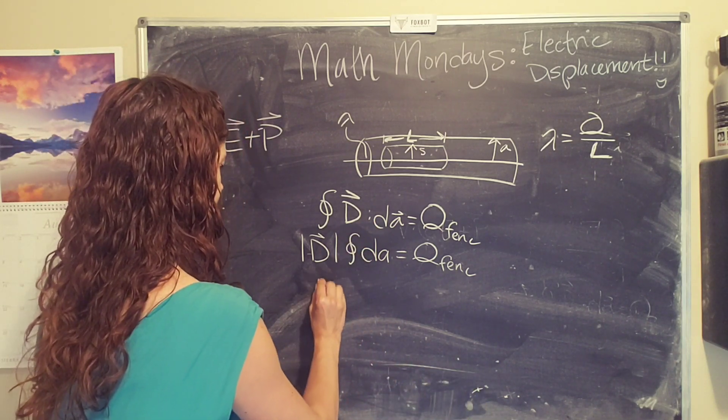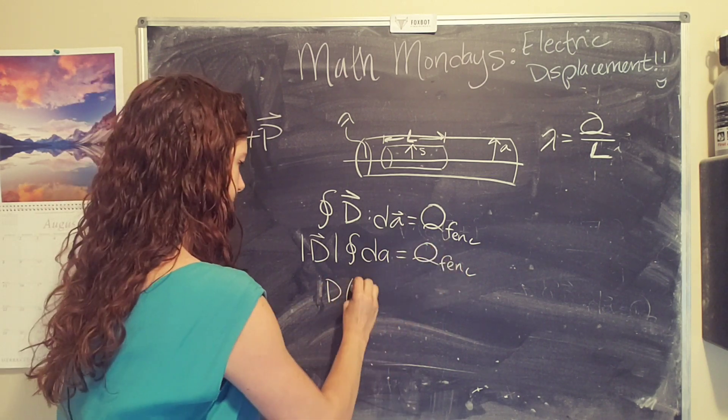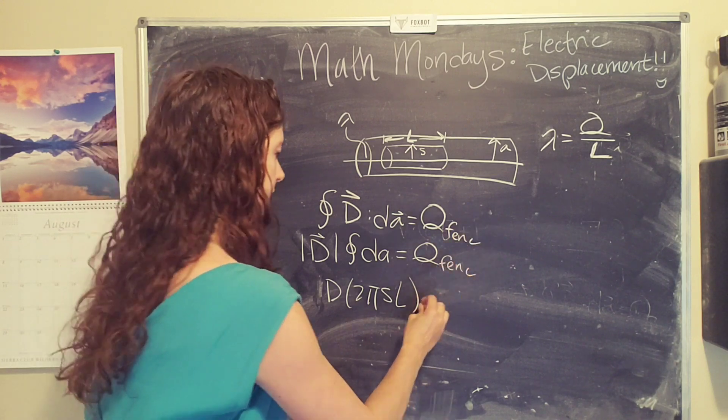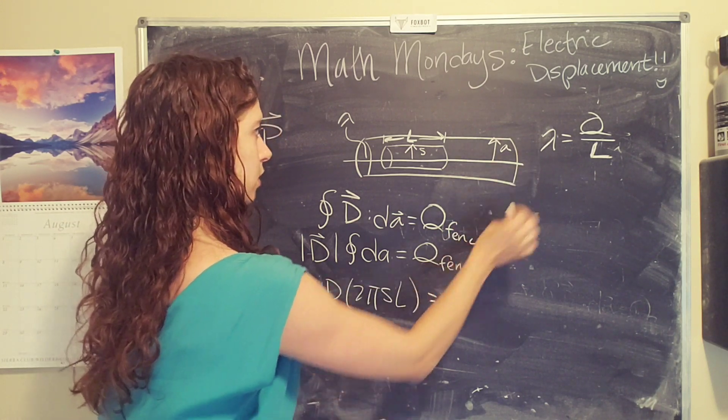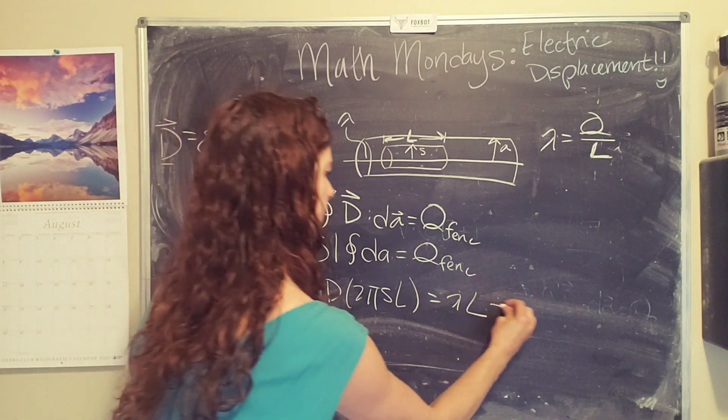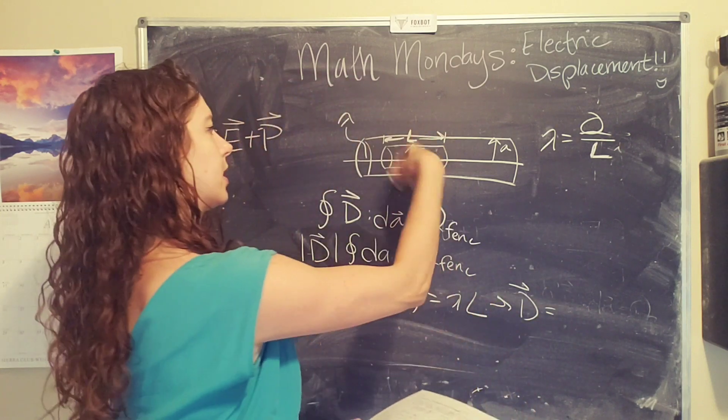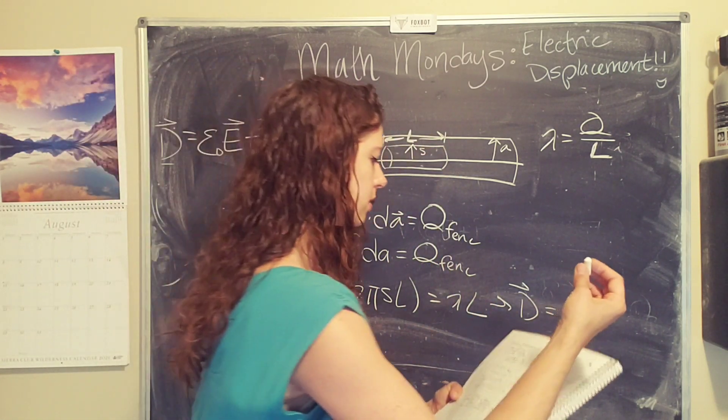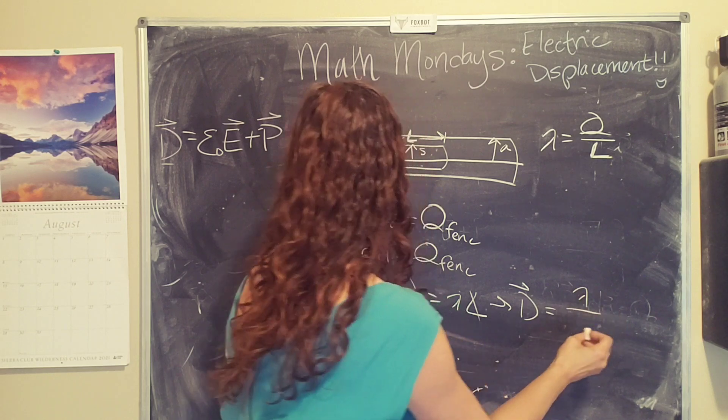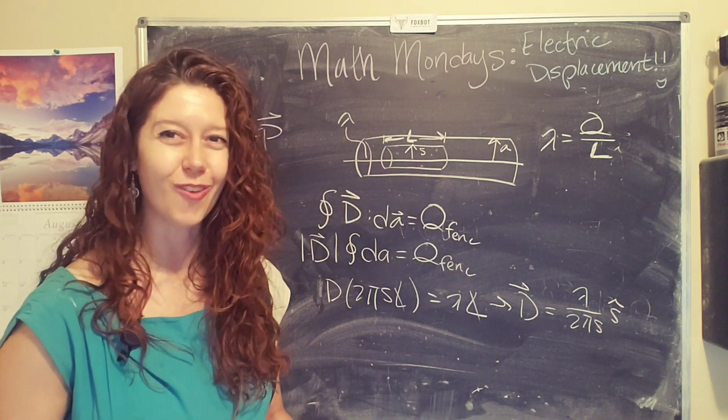So what we end up with is the magnitude of d, which I'm going to just draw as d, because I'm going to be lazy, times 2 pi s, the radius of our Gaussian surface, times the length of our Gaussian surface equals, so this QF enclosed, we're going to replace with lambda L. And then we can solve for d and put back in the vector quantity. And since we know that it has to point radially outward, because that's the only part of the dot product that is non-zero, we get the L's cancel, we get lambda over 2 pi s in the s-hat direction, or radially outward. Yay!